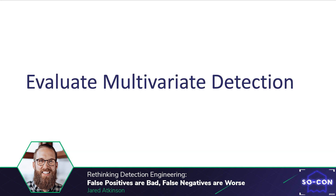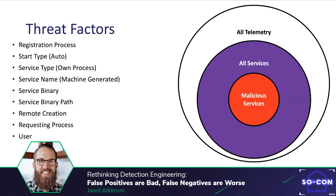At this point we haven't evaluated whether this event represents a benign or malicious action — we have simply identified that it is a service and thus could be representative of a malicious service, so we should build out as much context as we can. Now we can start to identify ways to determine if this service is in fact malicious. Ideally we can do this as part of a multivariate detection which considers many factors we've collected as part of our composite event. Generally we'd want to use some combination of the details to create some score representing our confidence in the likelihood that the service was created for malicious purposes.